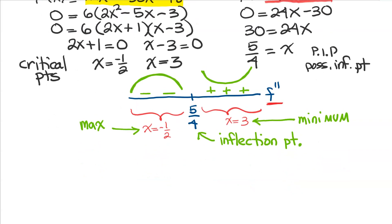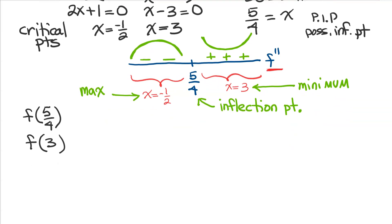Now, what I need to do with every one of these points is I need to plug them back into the original function. So I'm going to plug 5 fourths into the original function, I'm going to plug 3 into the original function, and I'm going to plug negative 1 half into the original function.